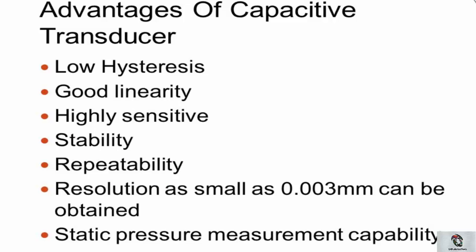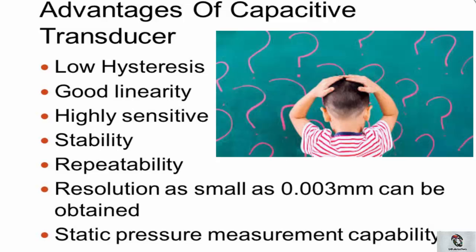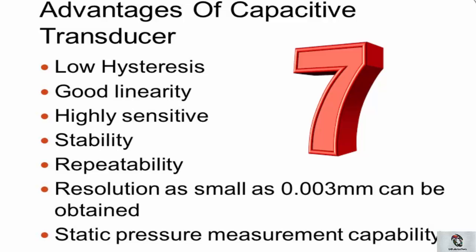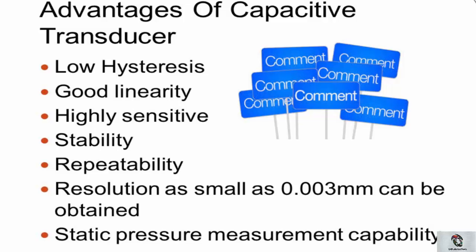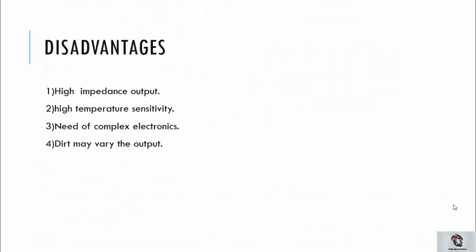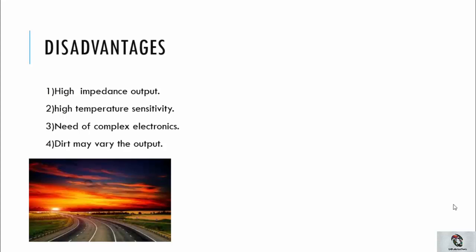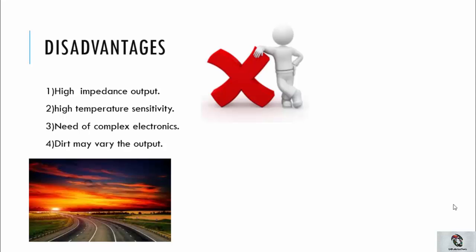Now coming to the advantages — why should we use a capacitor transducer over others? I have explained seven good qualities of a transducer in the transducer lecture. A capacitor transducer works well under many conditions: good linearity, high sensitivity, and repeatability. Moreover, it provides low hysteresis and good resolution. If you don't know about hysteresis, let me know in the comment section below and I may cover that topic.